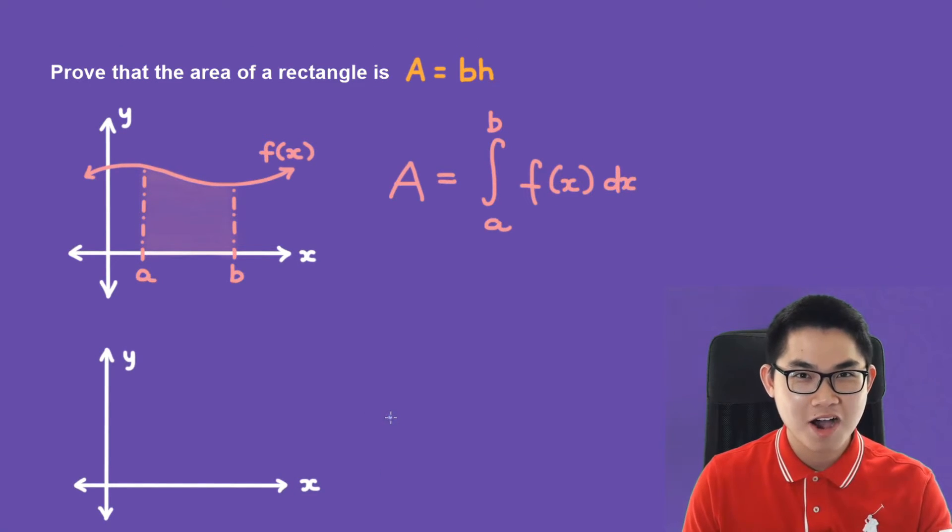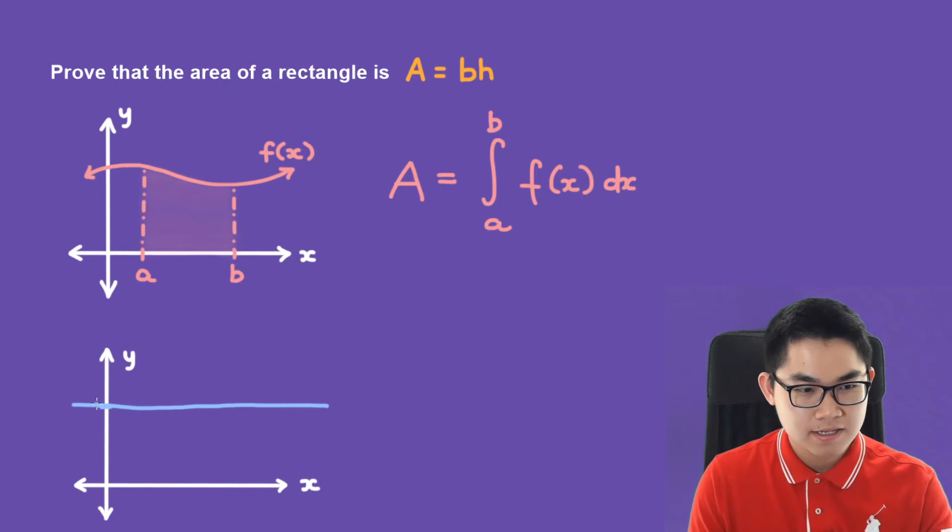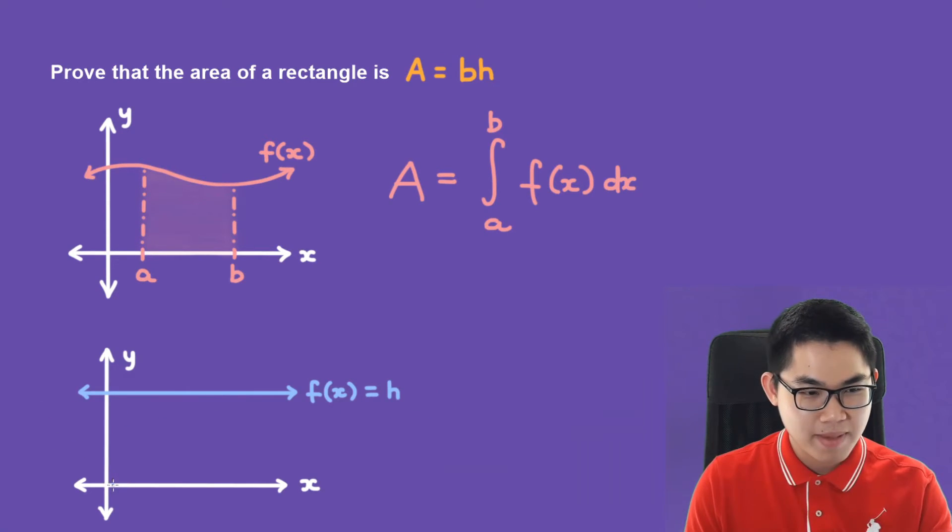Now let's draw our rectangle with a height of h. All we have to do is draw a function or a line where f(x) equals h. Let's draw the base. This point will be the base and this is the origin. If we draw everything together, you can see here is our rectangle.